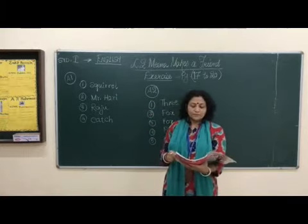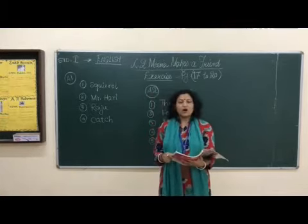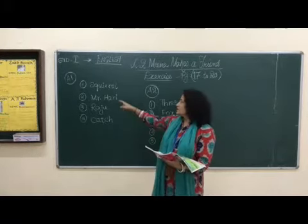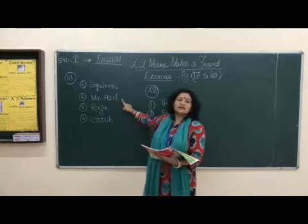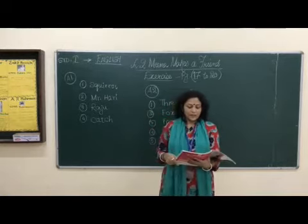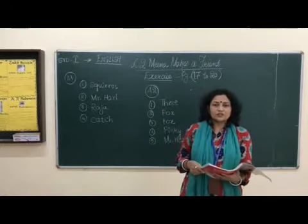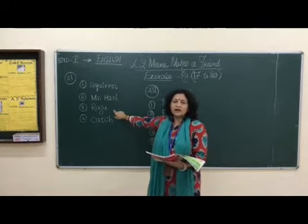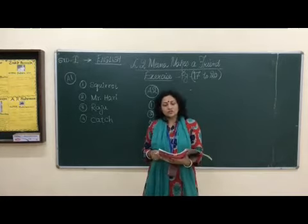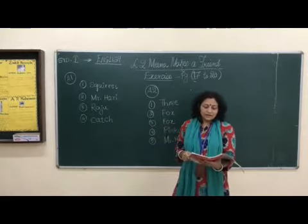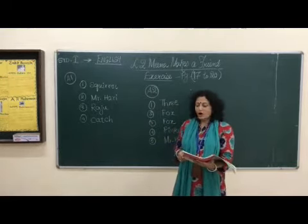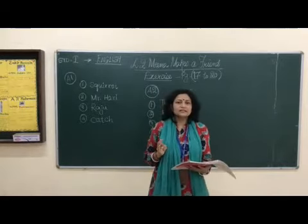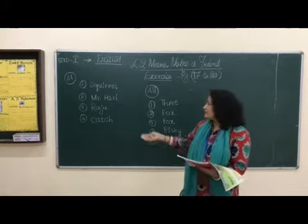Number two: Meena's class teacher is Pinky or Mr. Dharin? Meena's class teacher is Mr. Dharin. Number three: Meena's new friend is Toto or Raju? Meena's new friend was Raju — he is a fox, and Toto was a tortoise. Number four: Meena and Raju played a game of catch or good boy? They played catch.